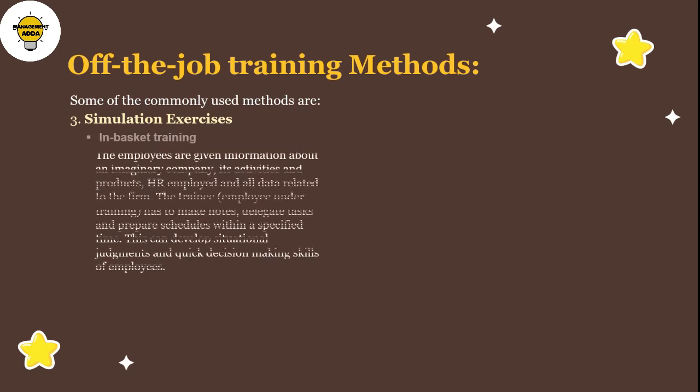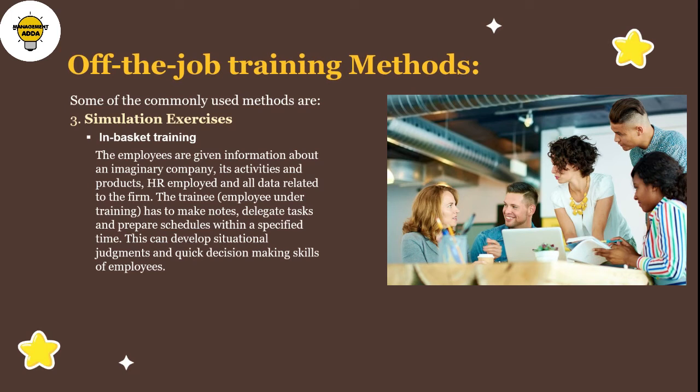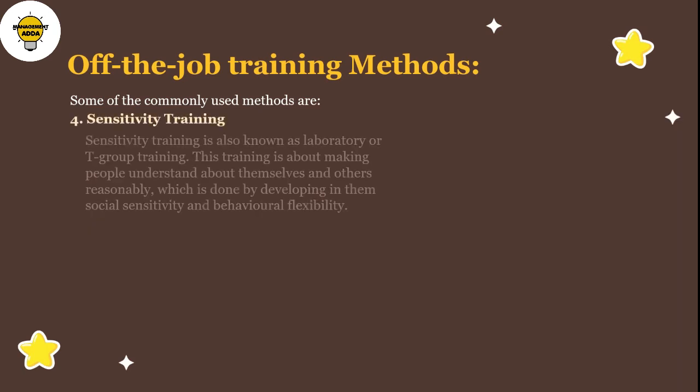In the in-basket method, the trainee is given information about an imaginary company — its activities, products, HR employees, and all related data. The trainee has to make notes, delegate tasks, and prepare schedules within a specific time. This develops situational judgment and quick decision-making skills.